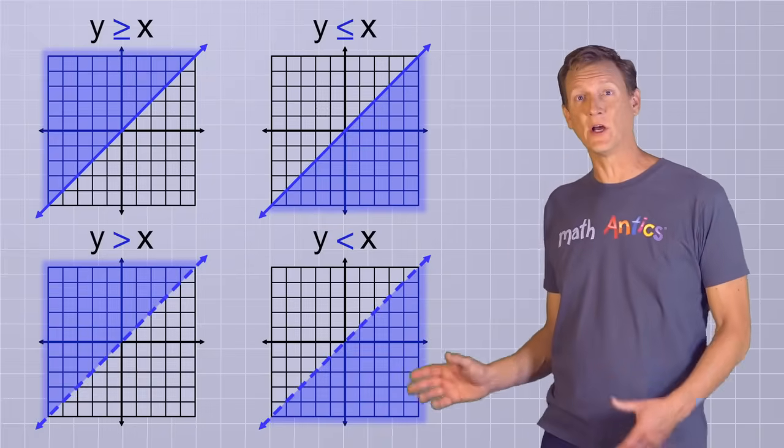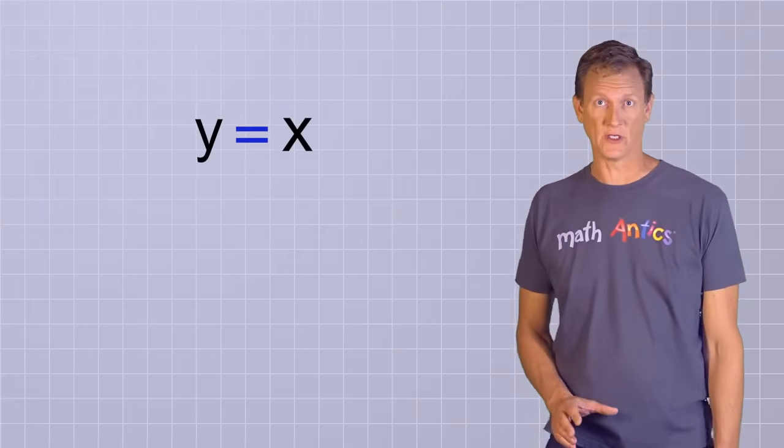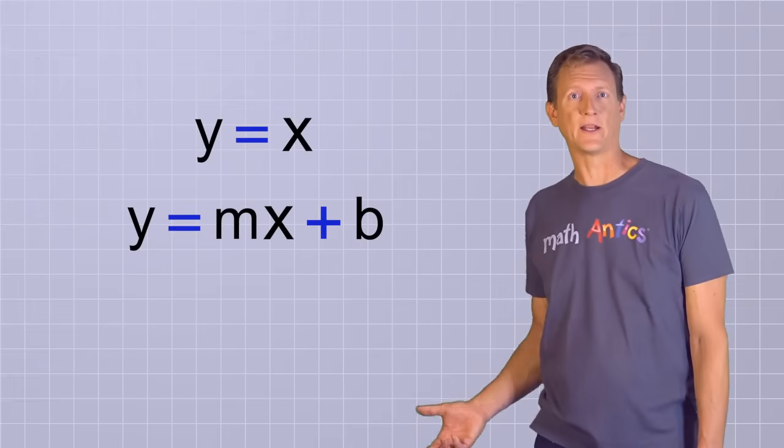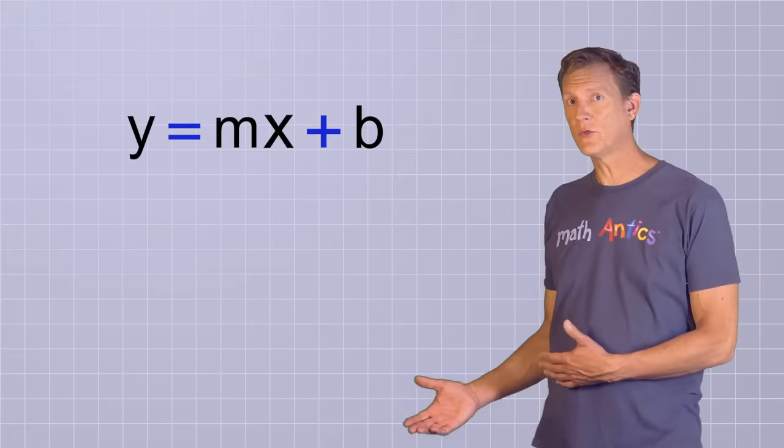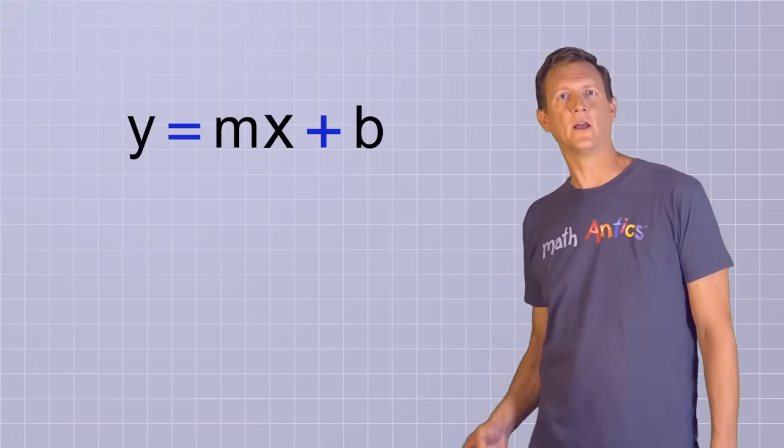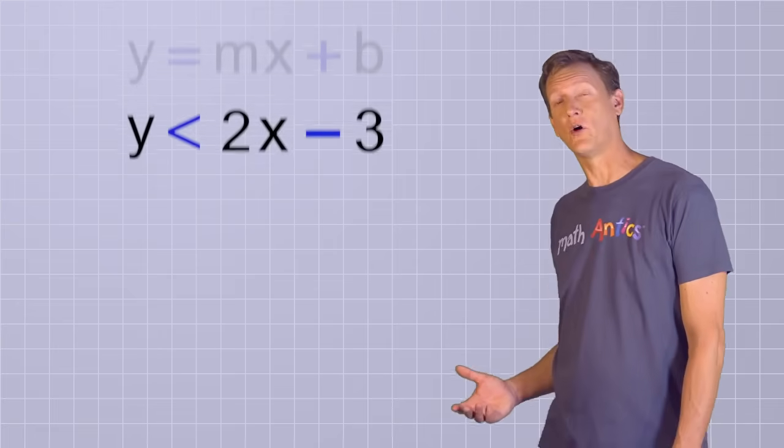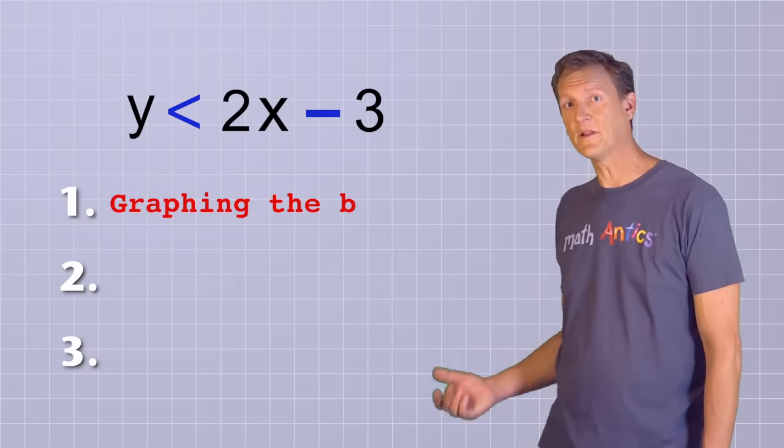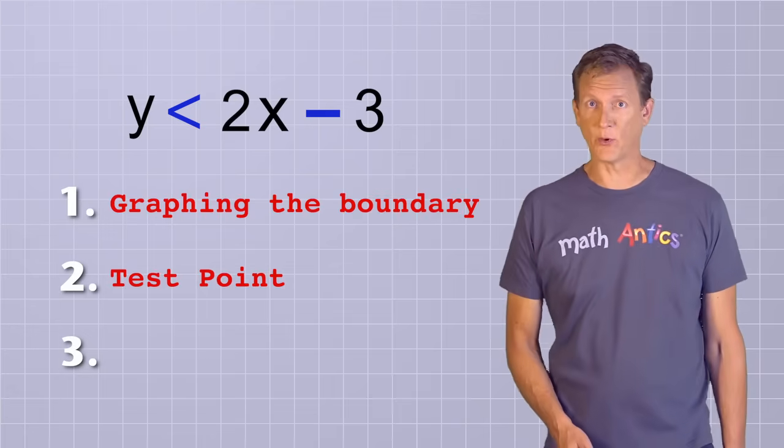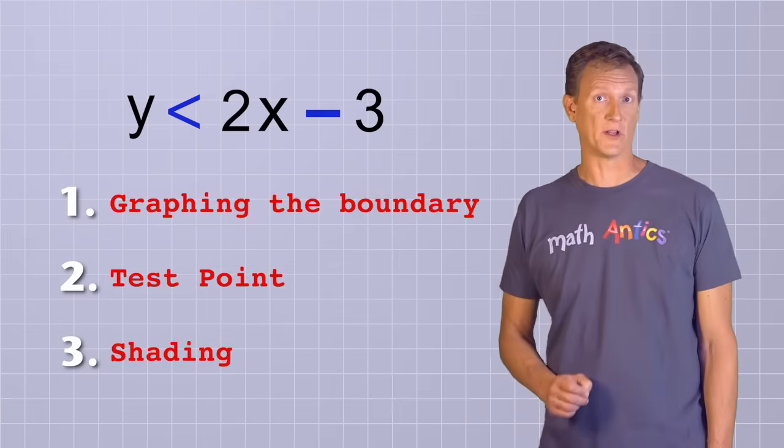Okay, so these four graphs should give you a pretty good idea how graphing inequalities works in general. But now we need to go beyond the simple y equals x equation to the general equation of a line. To do that, I'll walk you through the process of graphing the linear inequality y is less than 2x minus 3. That will involve three main steps. Graphing the boundary line, picking a test point, and shading the proper side of the line.